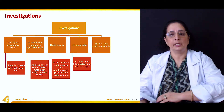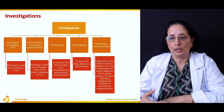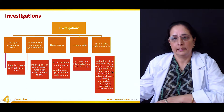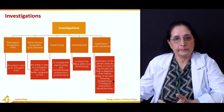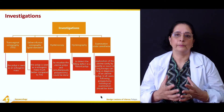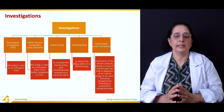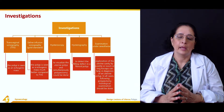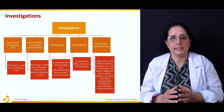Examination under anesthesia involves exploration of the uterine cavity, usually performed with a curette. If any polyps or fibroids are found, polypectomy or fibroid removal can be performed, and tissue can be taken for biopsy and sent to the lab for further examination. Anesthesia is given, detailed exploration is performed, and any growths can be removed and sent for histology.